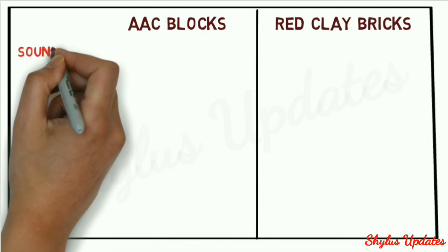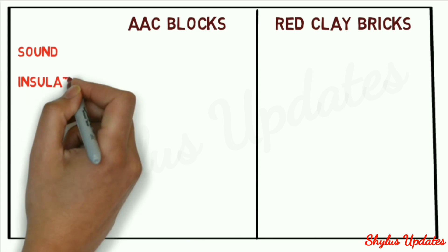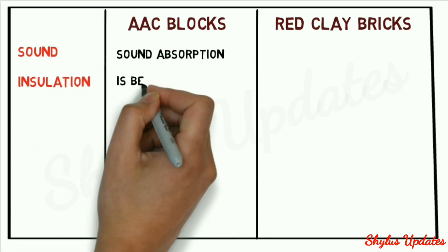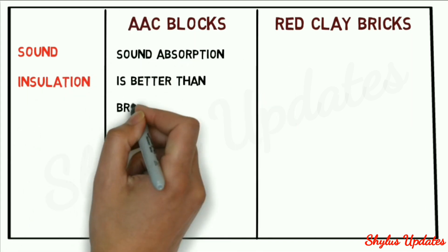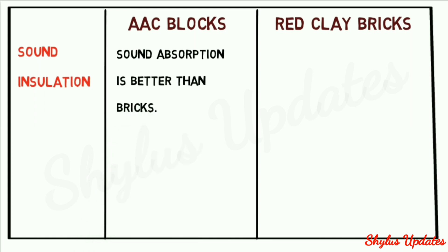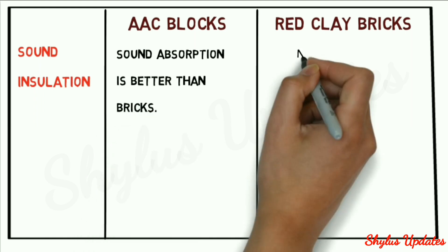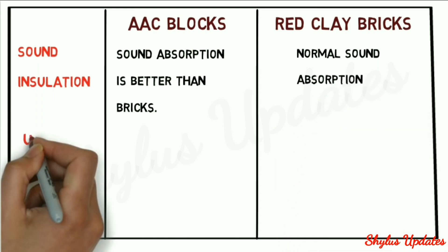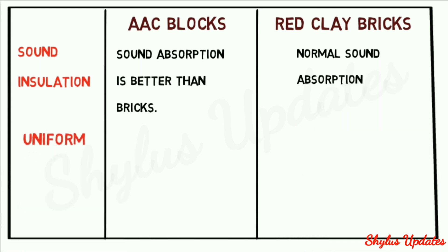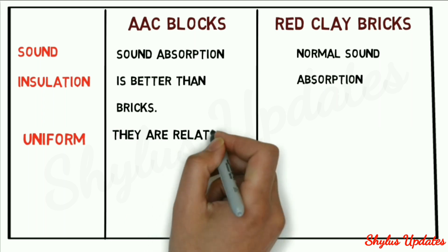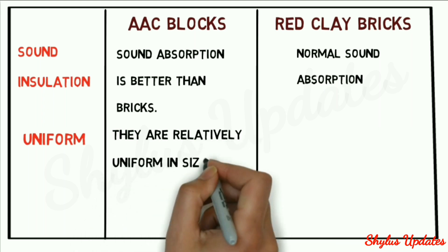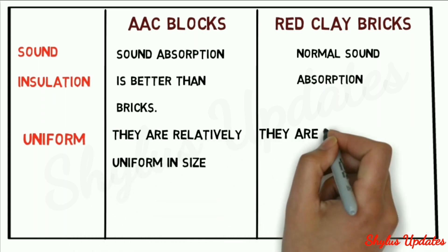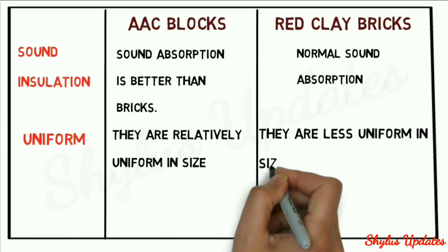Sound insulation of AAC blocks: sound absorption is better than bricks. Sound insulation of red clay bricks: normal sound absorption. Uniformity of AAC blocks: they are relatively uniform in size. Uniformity of red clay bricks: they are less uniform in size and texture.